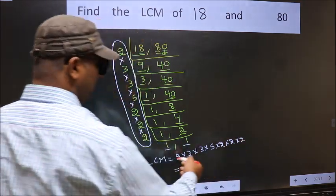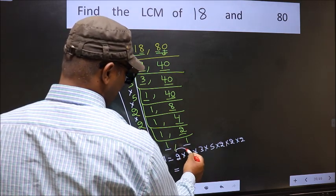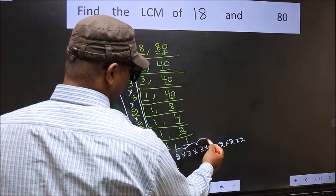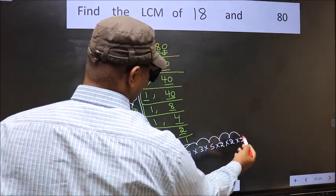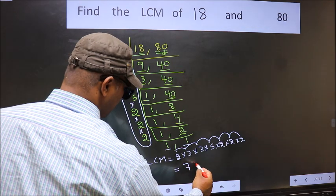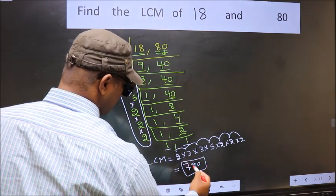So let us multiply these numbers. 2 into 3 is 6, into 3 is 18, into 5 is 90, into 2 is 180, into 2 is 360, into 2 is 720. So 720 is our LCM.